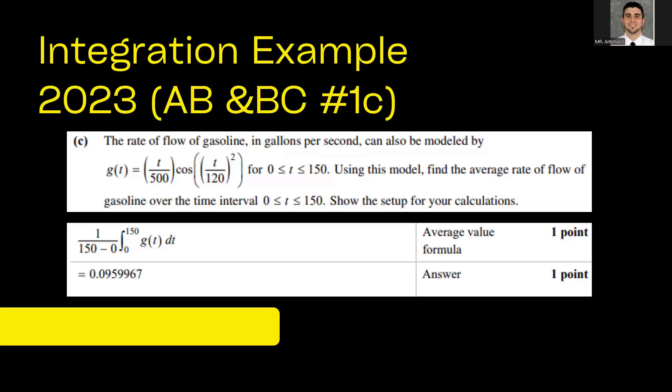So here's our example from the 2023 AP exam. Whether you had AB or BC, this was question number 1C. In part C, they give you the function for the rate of flow and ask you to find the average rate of flow. Now, it's going to be a definite integral. This is how we set it up. This is the notation. But once you have that notation down, all you have to do is write the answer because you can get Desmos to do all the calculations for you. So let's jump into Desmos, and I'll show you how to do that.